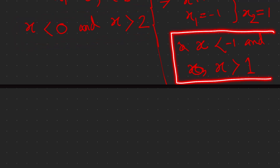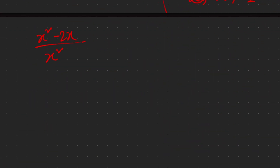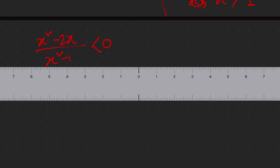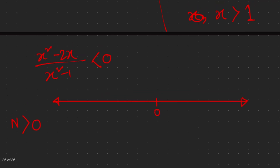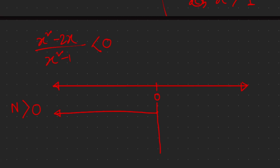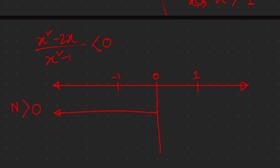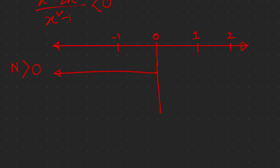Let's now draw the sign line. Our expression is (x squared minus 2x) divided by (x squared minus 1) less than zero. We draw a number line with key points: negative 1, 0, positive 1, and 2. The numerator is positive when x less than 0 or x greater than 2, and the denominator is positive when x less than negative 1 or x greater than 1.